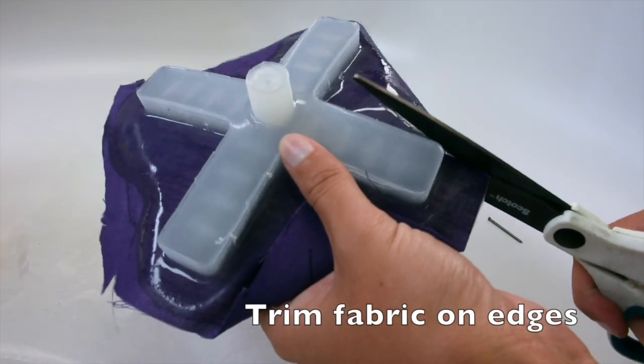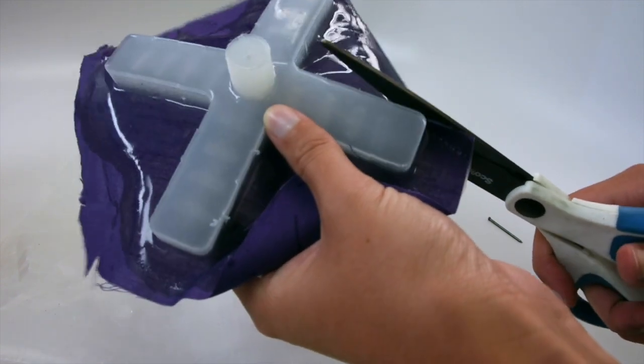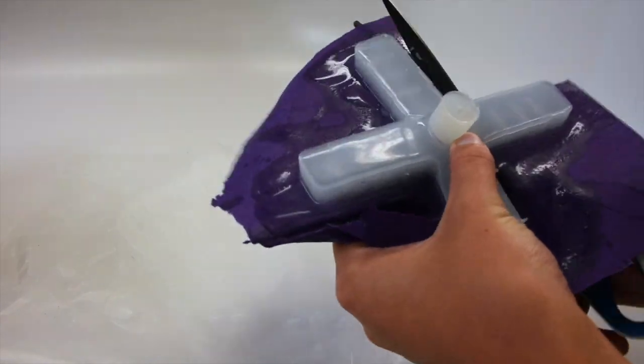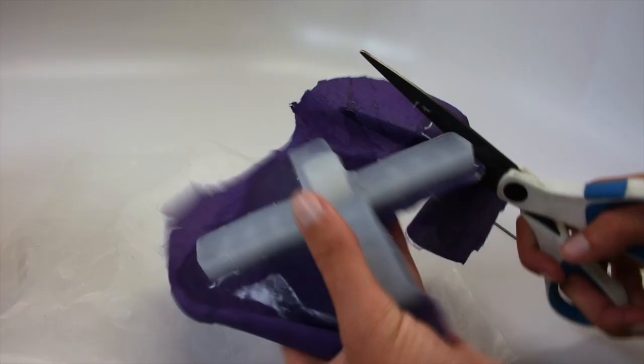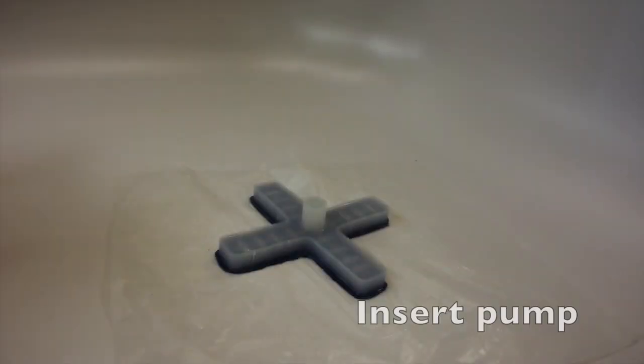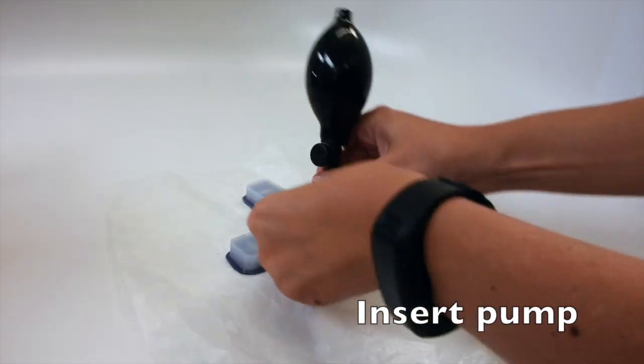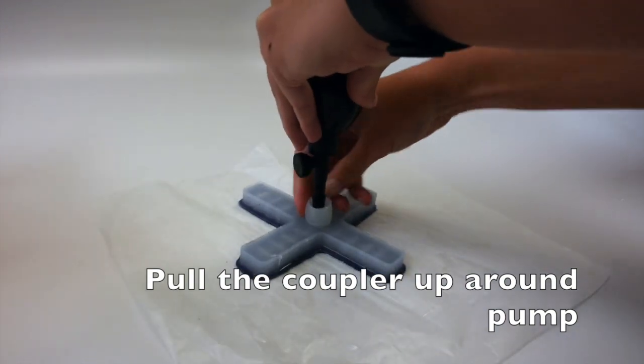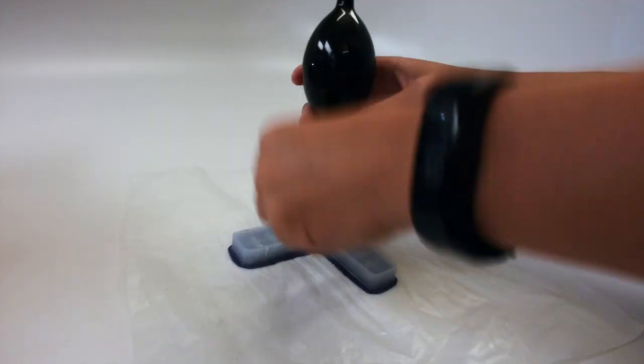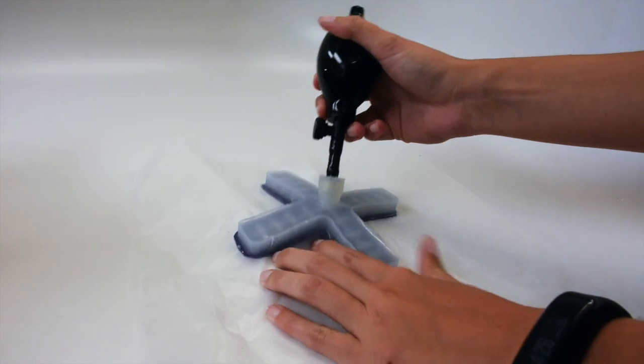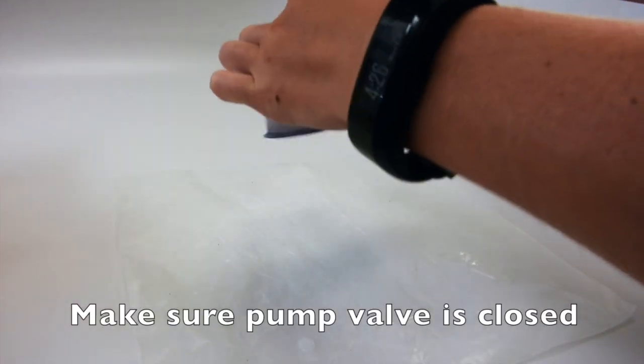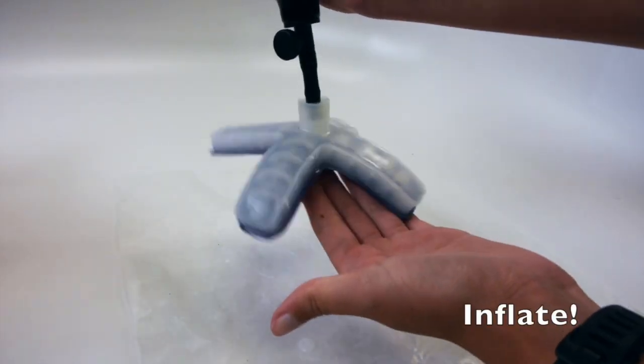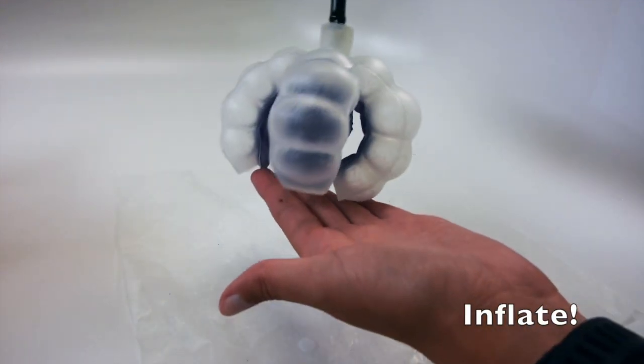Use scissors to trim the fabric around the edges of the gripper. Use the pump without any attachments. Inserting the pump into the coupler can be tricky. Wedge one side in and pull the coupler up around it. Check to make sure that the pump valve is closed. Now you're ready to inflate and test your gripper.